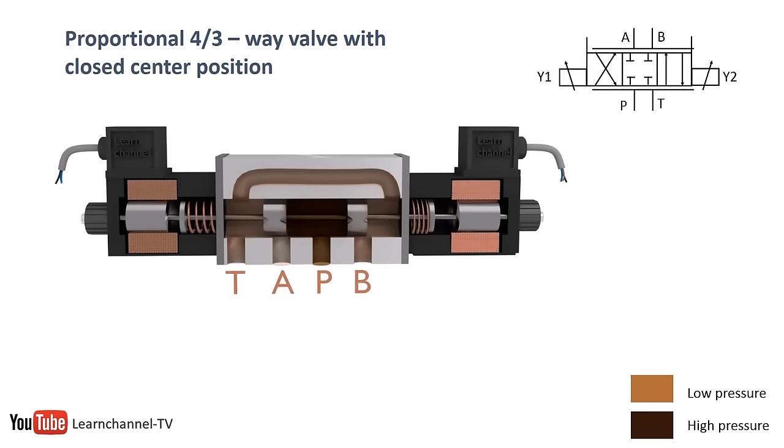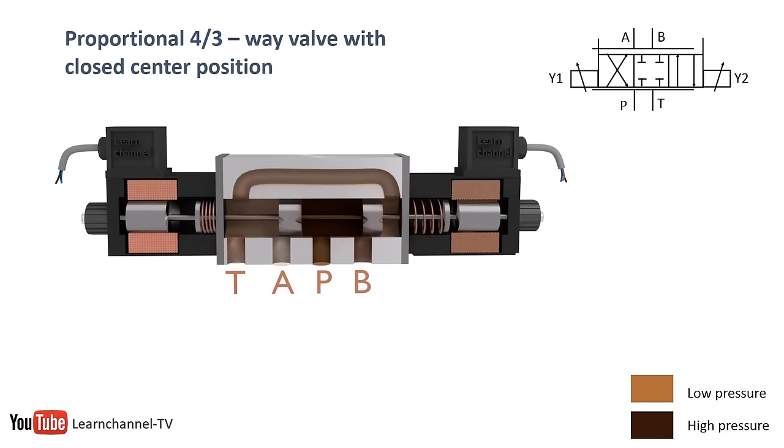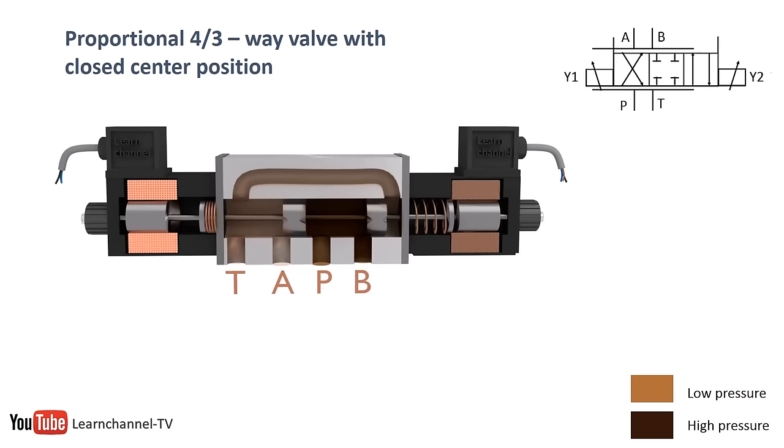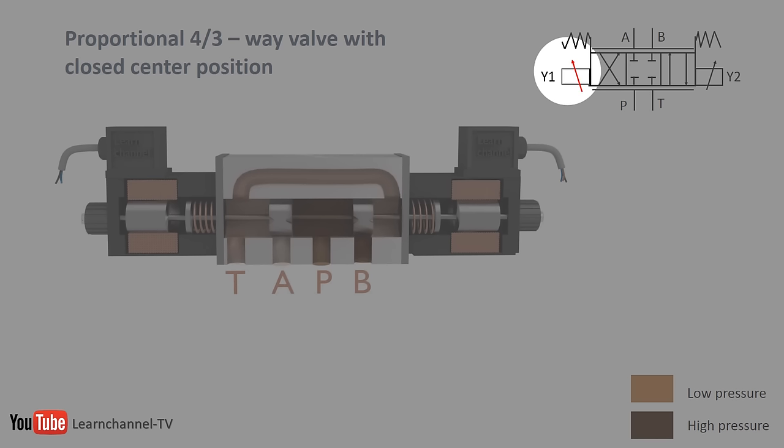Mechanically, proportional wave valves appear similar to their binary counterparts. The big difference is the way the solenoids perform. With an electrical control signal, which can be a variable voltage or current, the proportional solenoids can produce a variable force to shift the spool against the counteracting spring. A sloping arrow in the operational box within the symbol indicates this proportional performance.